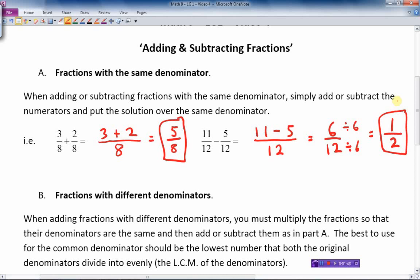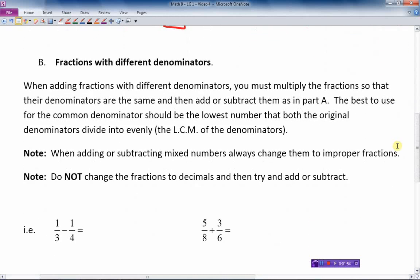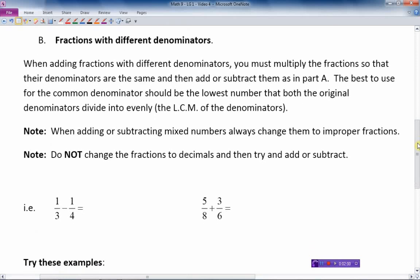Which brings us now to fractions that do not have common denominators. They have different denominators. Well, when adding fractions with different denominators, we must change the fraction, multiply them, top and bottom, by the same number so that their denominators are the same, both fractions are the same, and then add or subtract them, just like we did in Part A here.